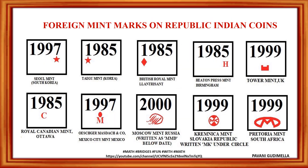Foreign mint marks also appear on Republic Indian coins. There have been occasions in the past when India faced a scarcity in coin production, prompting mints located abroad to fulfill coin demand. These coins minted abroad bear specific identification marks. For example, a 1997 coin with a star towards the right-hand corner was manufactured at the Seoul mint in South Korea. A year-2000 coin was made at the Moscow mint in Russia. A 1985 coin was made at the Royal Canadian Mint.